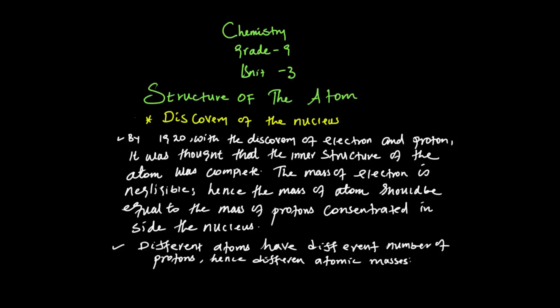In the previous class, we have learned about the properties of cathode rays. In addition to that, we have discussed the charge-to-mass ratio — that means who determined the charge-to-mass ratio of electrons, who determined the charge of electrons, and also how we can calculate the actual mass of an electron. The charge-to-mass ratio was determined by C.J. Thomson.